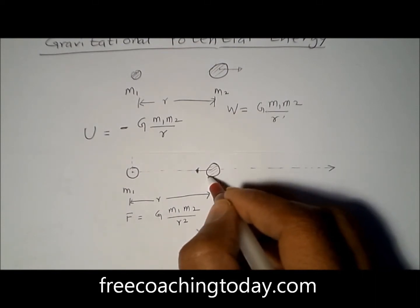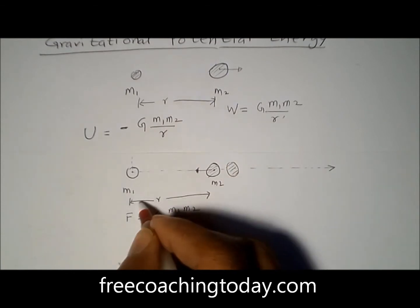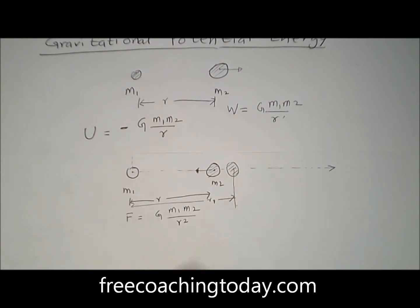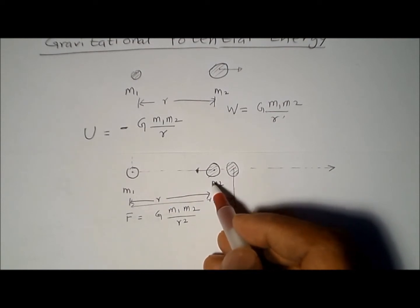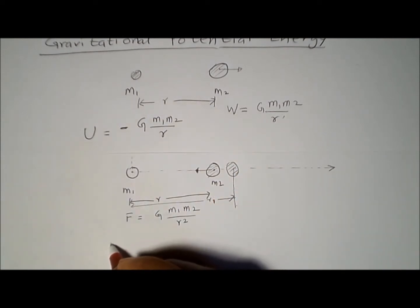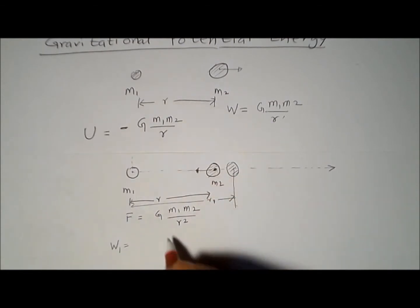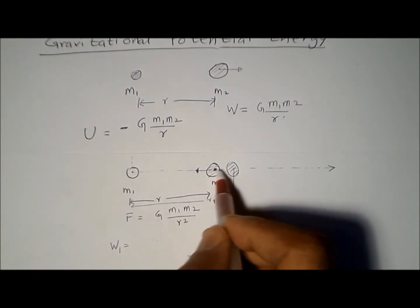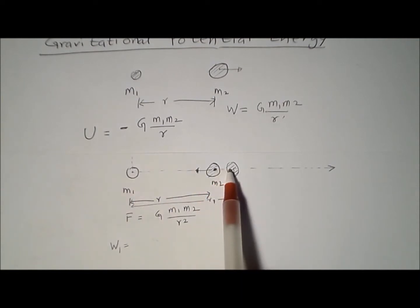We are going to move mass M2 a tiny amount of distance such that the new distance between M1 and M2 is R1. Since M1 is pulling M2, if we move M2 in the opposite direction we will have to do some work. The magnitude of this work, which we denote W1, is the force F acting between the two masses — G·M1·M2 divided by R² — multiplied by the distance moved, which is R1 minus R.